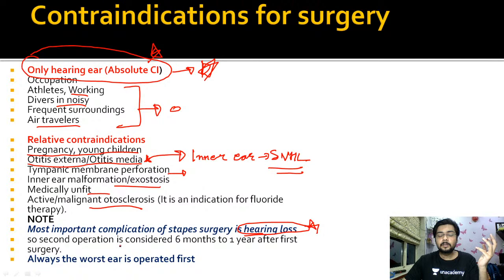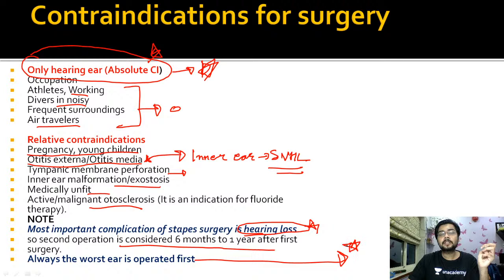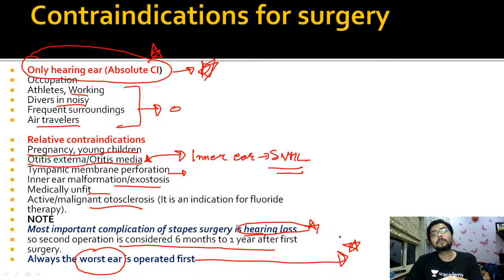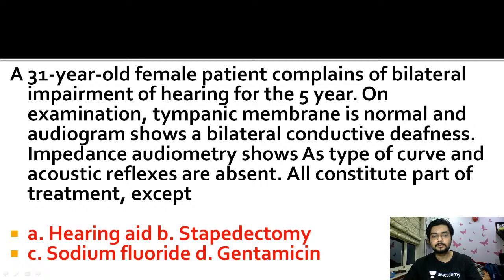The most important complication is sensorineural hearing loss - that is why you do not operate both ears simultaneously, but with a gap of six months to one year after the first surgery. As a rule: always operate on the worst ear first. You do not want to worsen the better ear. If there is a clinical scenario, remember - operate on the worst ear. If the patient improves, they will appreciate you because now they are hearing better in their previously worst ear.